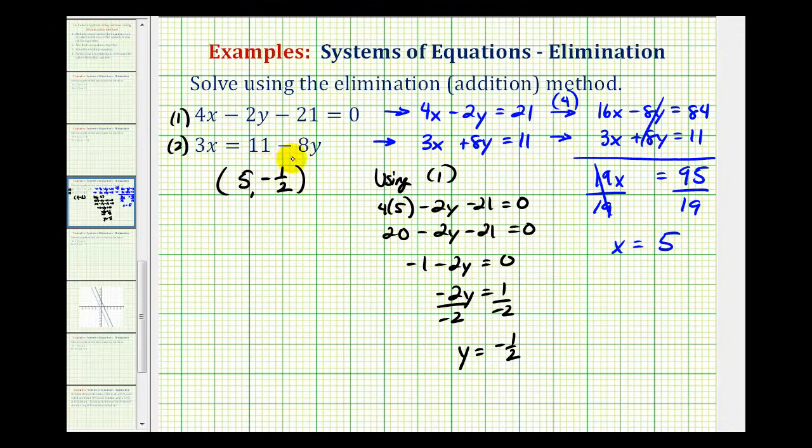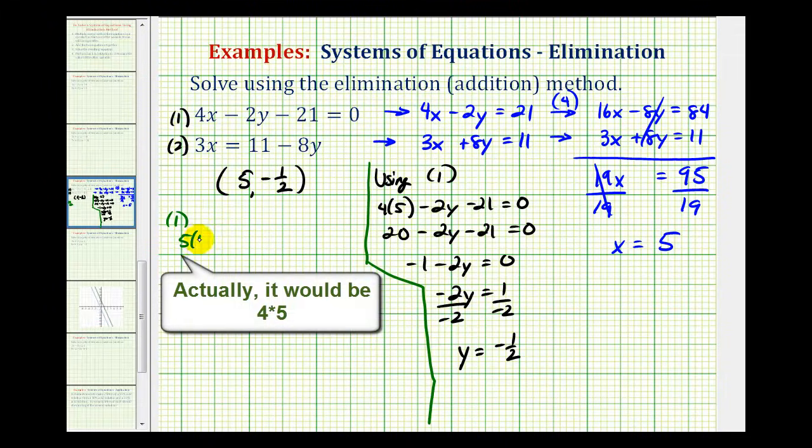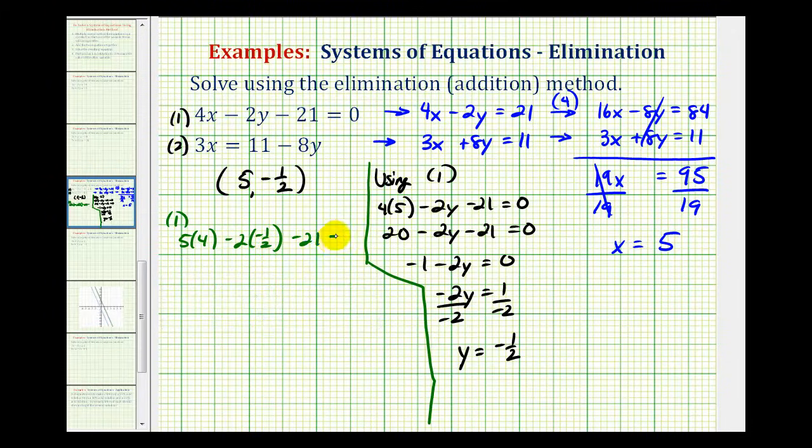If we want to verify these two solutions, we would have to substitute these values into both of the equations. And let's go ahead and do that. So for equation 1, we would have 5 times 4 minus 2 times negative 1 half minus 21 equals 0. This will be 20 plus 1 minus 21 equals 0, so when that checks, we have 0 equals 0.